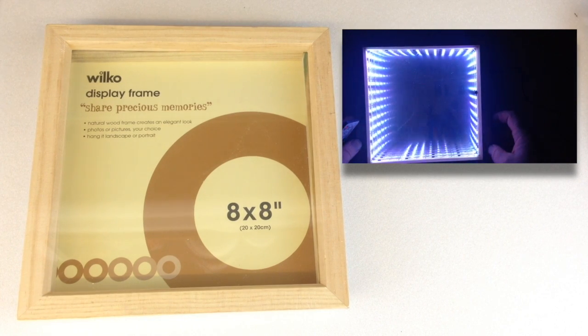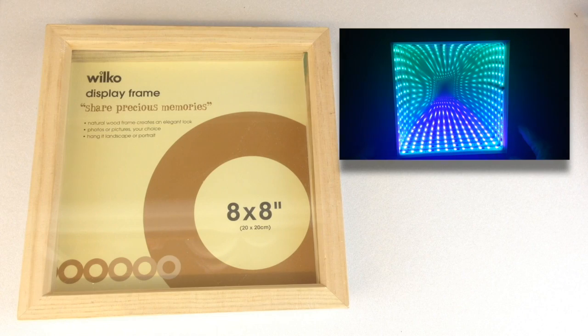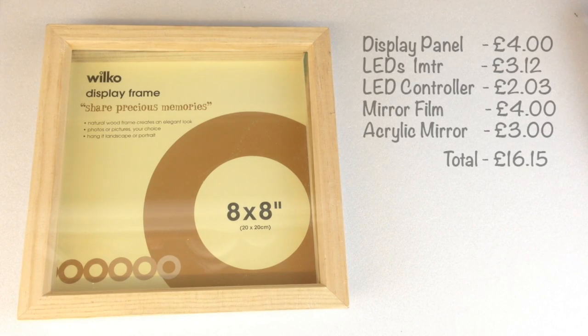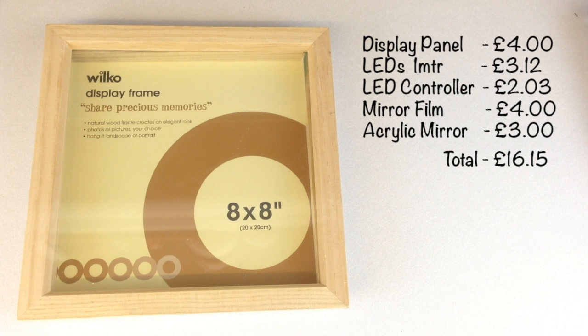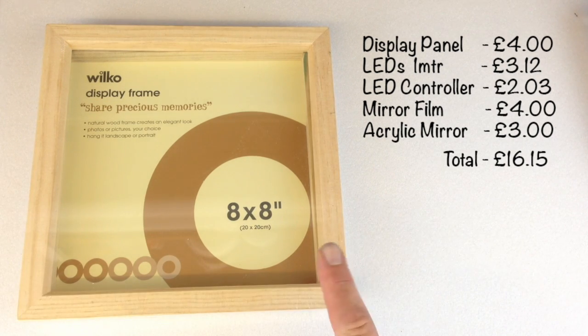Good morning everybody, what we're going to do this morning is make an 8x8 or 20x20 centimeters infinity mirror. What we're going to need is a budget price - this is all less than 20 pounds, that's around about 30 dollars or something like that. We're starting off with a display frame, this one was purchased at the company Wilkinson's for four pounds.